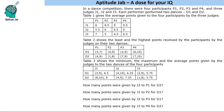Each participant performed two dances, D1 and D2. Table one gives the average points given to the four participants by the three judges. Average points basically means the average of the two dances.